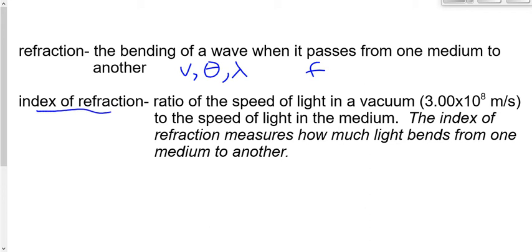The index of refraction we defined yesterday loosely as a measure of how much light bends when it goes from one medium to the other. But the technical definition is the ratio of the speed of light in a vacuum — which is always 3 times 10 to the 8 meters per second — to the speed of light in that medium. The symbol for the index of refraction is N, and C is the speed of light in a vacuum.